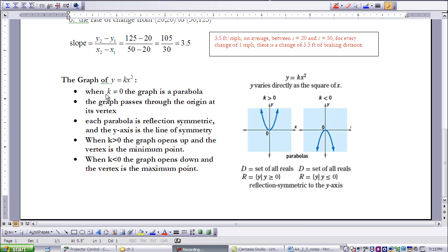When k is not equal to 0, the graph is a parabola. So as you see here, we get a graph of a parabola. Notice these graphs all pass through the origin, (0, 0).